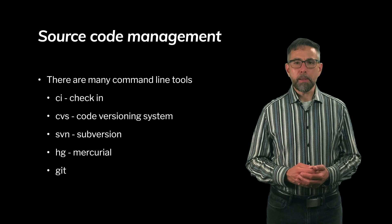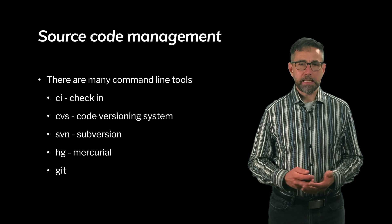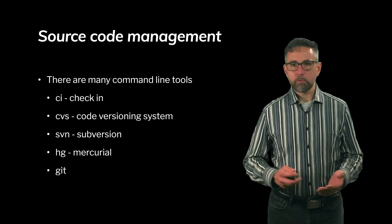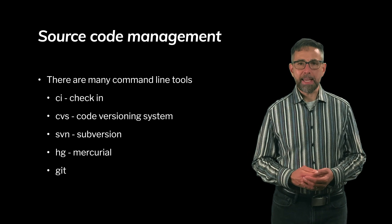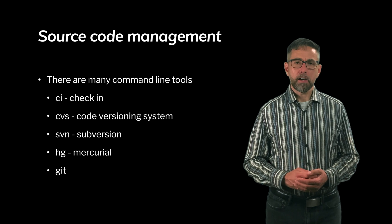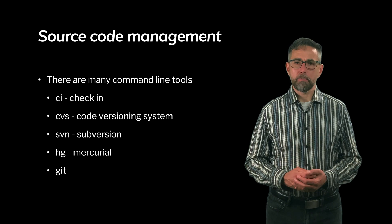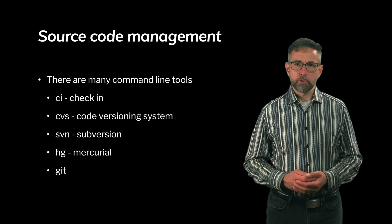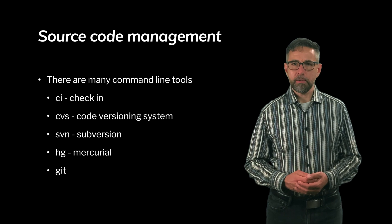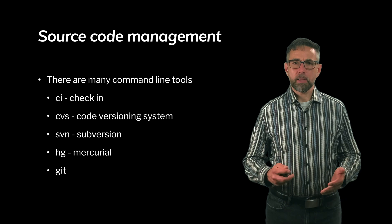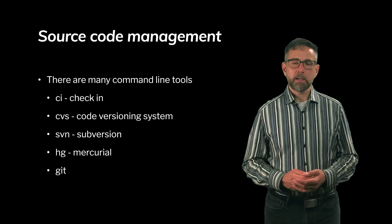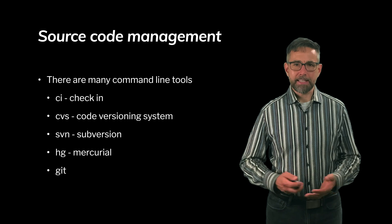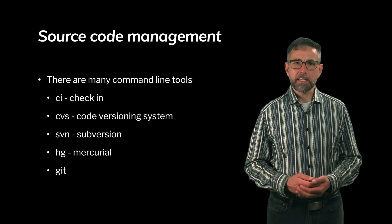There's a history of source code management. There have been many command line tools that work primarily in a Linux or Unix environment to help manage source code. The earliest one I know of was called CI, which stands for check-in, with a corresponding checkout. Following that was CVS, which stands for code versioning system. That was followed by SVN, short for subversion. Then came two comparable tools: one called Mercurial with the command HG, and the other called Git.